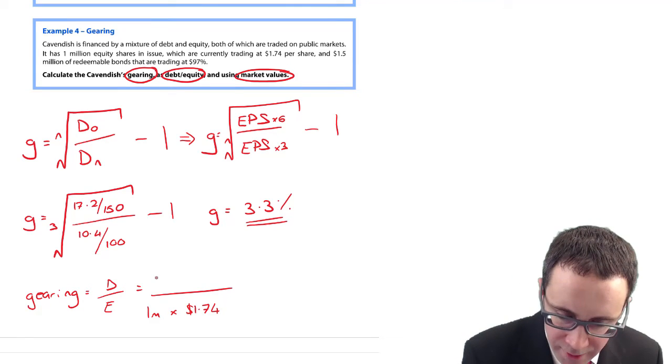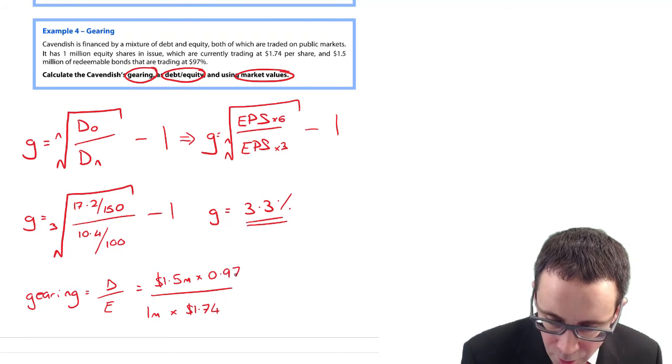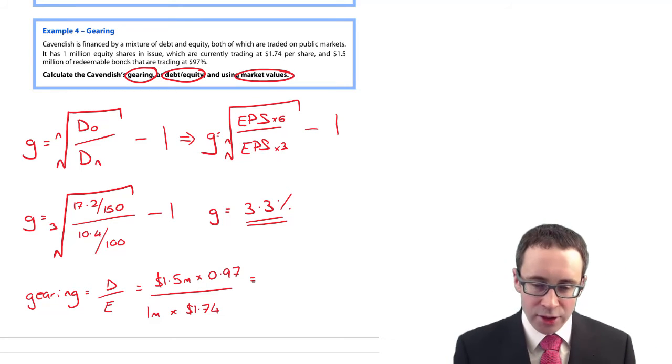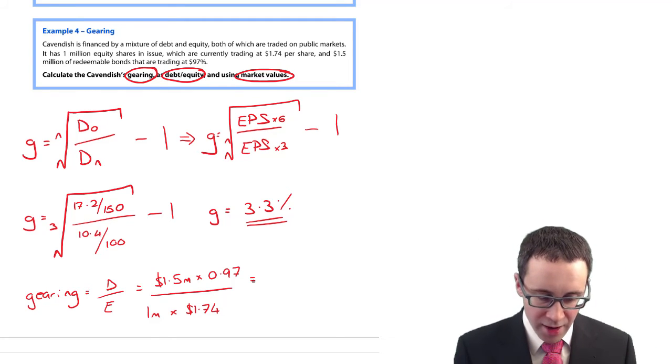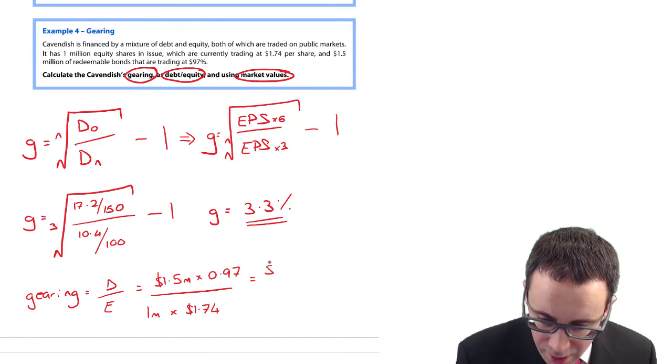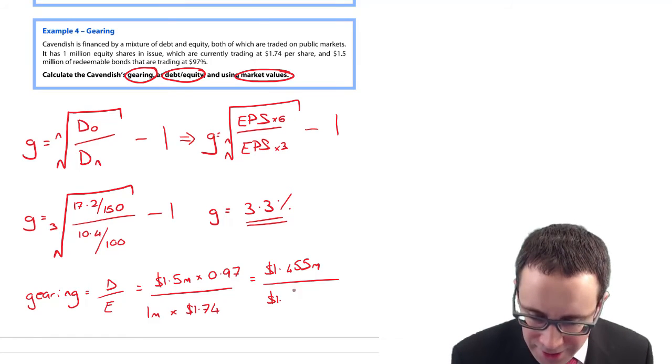$1.5 million is the par value of your redeemable bonds trading at 97% per dollar. For every dollar of bonds, they are worth 97 cents. So it's $1.5 million multiplied by 0.97, which gives $1.455 million.